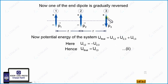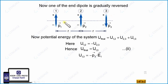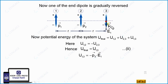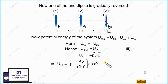For the new U13, we write minus P3 dot E1. The center of dipole 3 is at the equatorial position of dipole 1, so E1 is anti-parallel to P1 and points downward, with magnitude KP/(2r)³ since separation is 2r. The angle between P3 (now reversed) and E1 is 0°. So U13 = −P · (KP/8r³) · cos0° = −KP²/8r³.